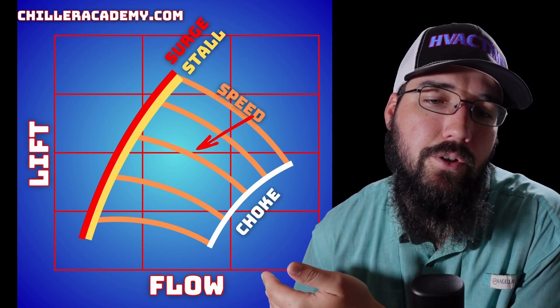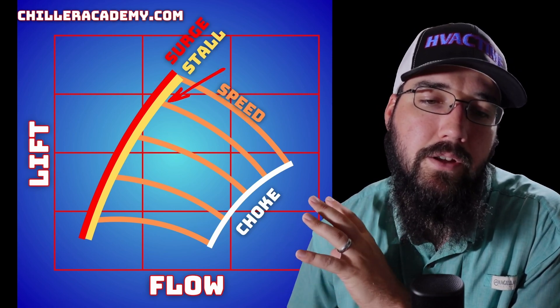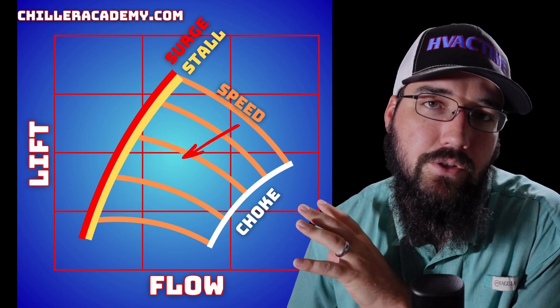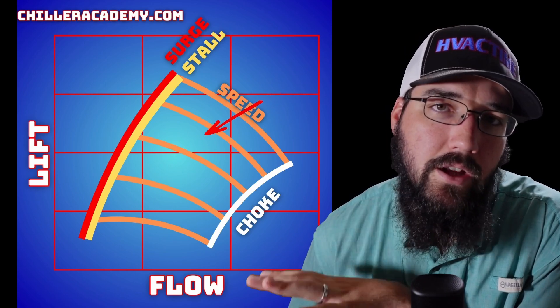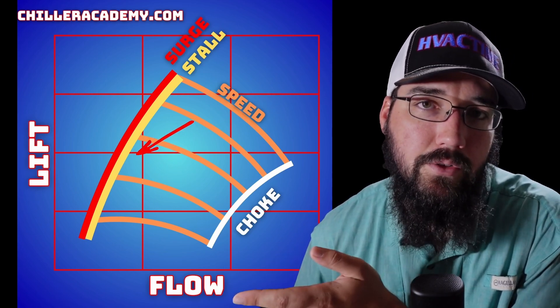But when you get into a condition where you're needing to unload, that's when you're really going to start to push this boundary. If that lift can't come down and track with this chart, then you're not going to be able to reduce the flow or the volume through the compressor enough, and you run into the risk of either surge or you over-process the refrigerant.